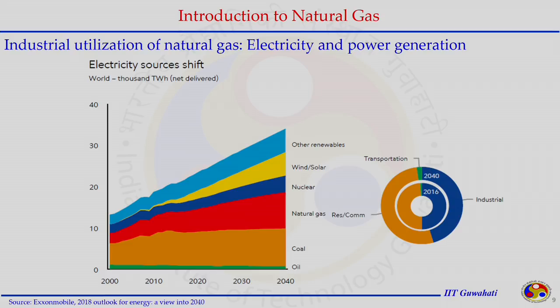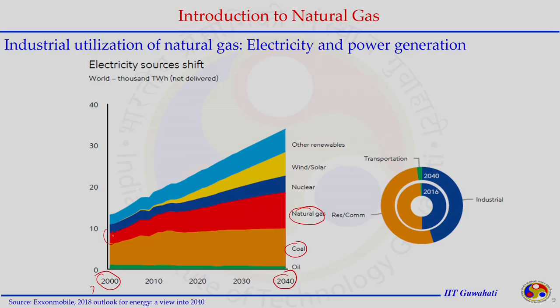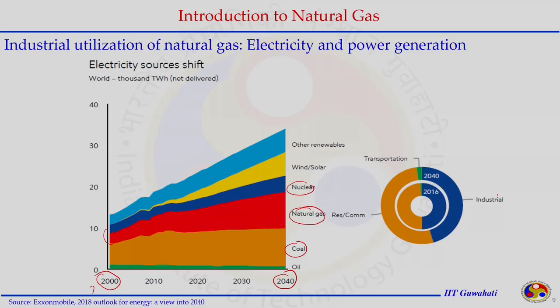For electricity generation from 2000 to 2040, coal contribution becomes stagnant while natural gas increases significantly as a fuel. Nuclear and other sources will also contribute due to increased energy demand. The generated electricity is utilized mostly in industries, with some in transportation and residential sectors.